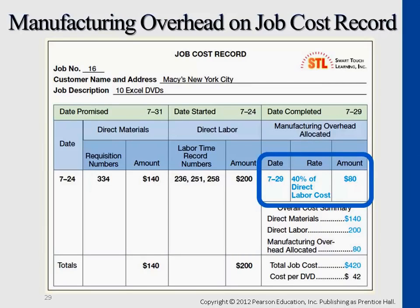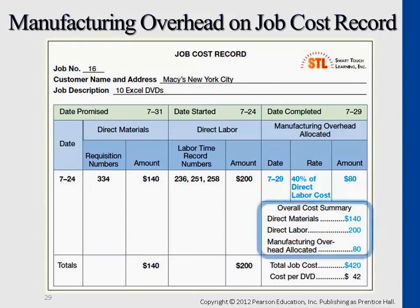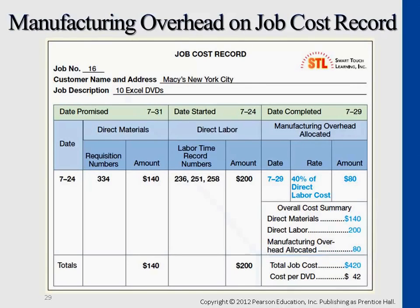So if you add all three together, the cost for this job will be $420 for this entire order. So if we want to determine the unit cost per DVD set, that will be $42, because 420 divided by 10 DVD sets.